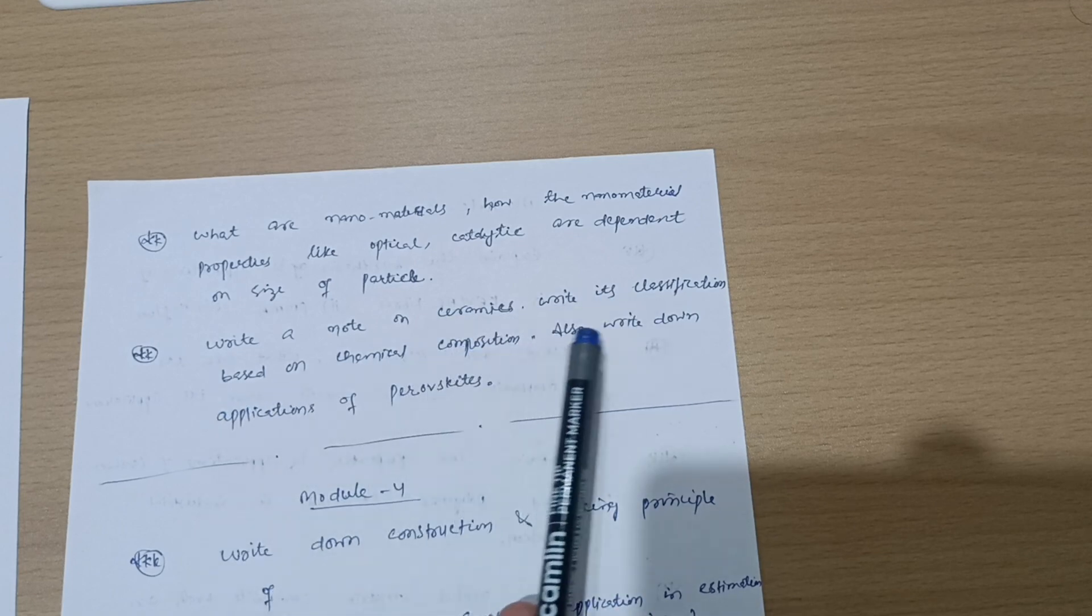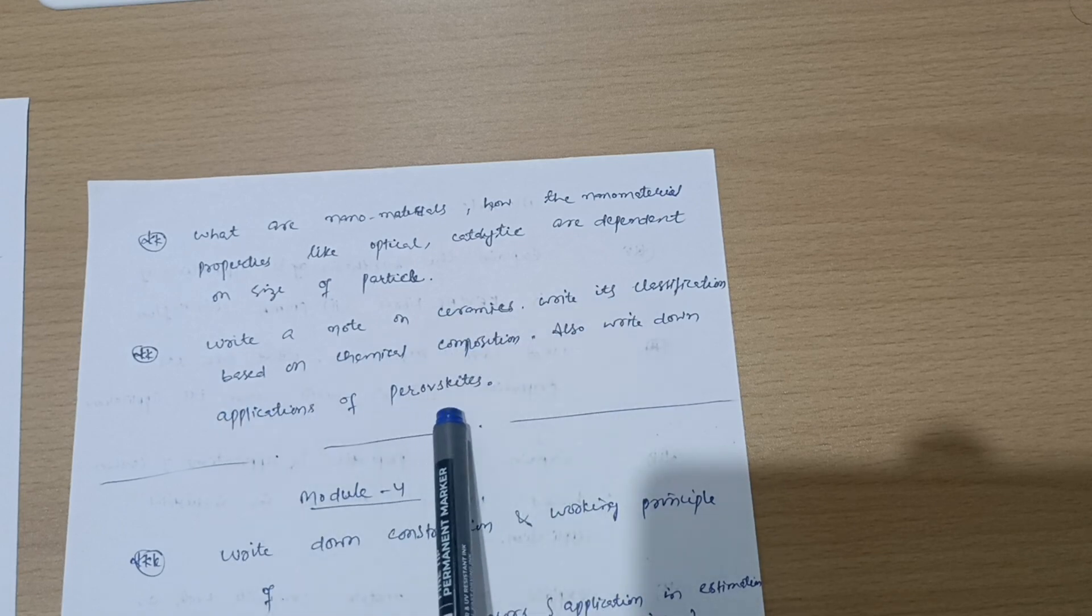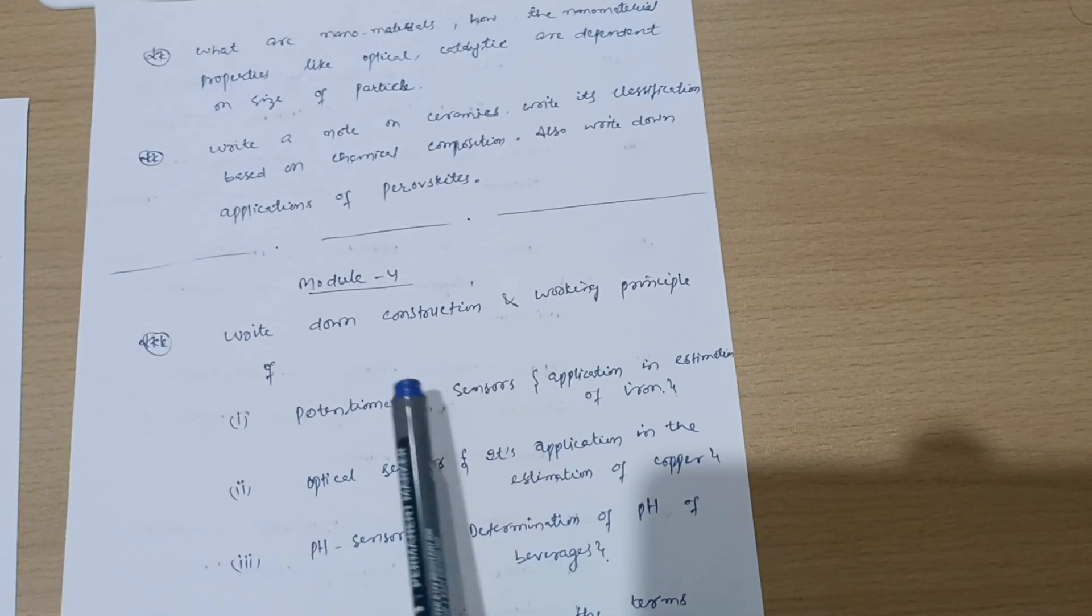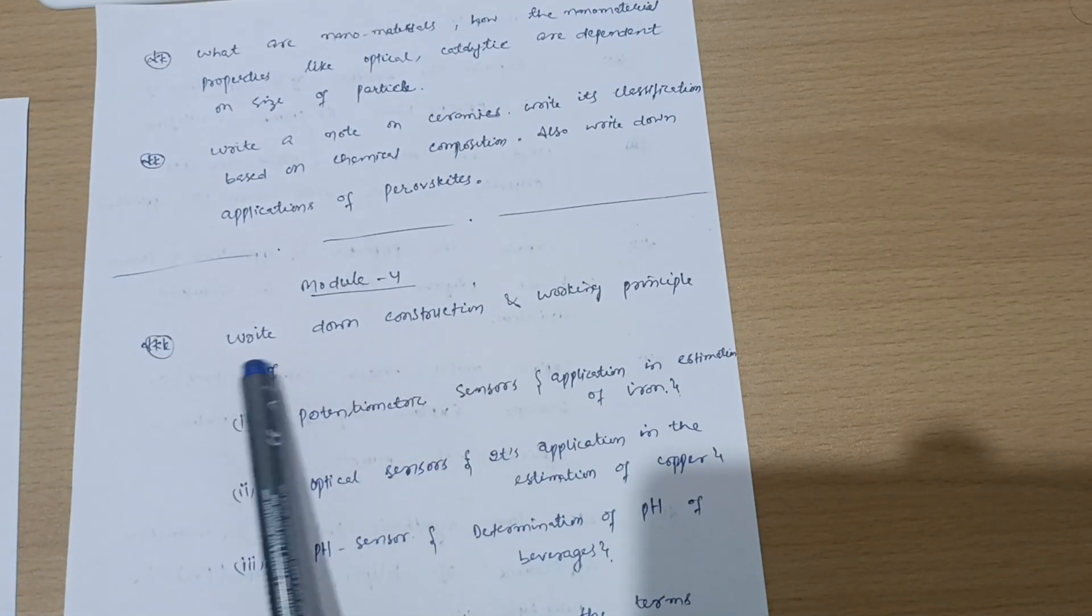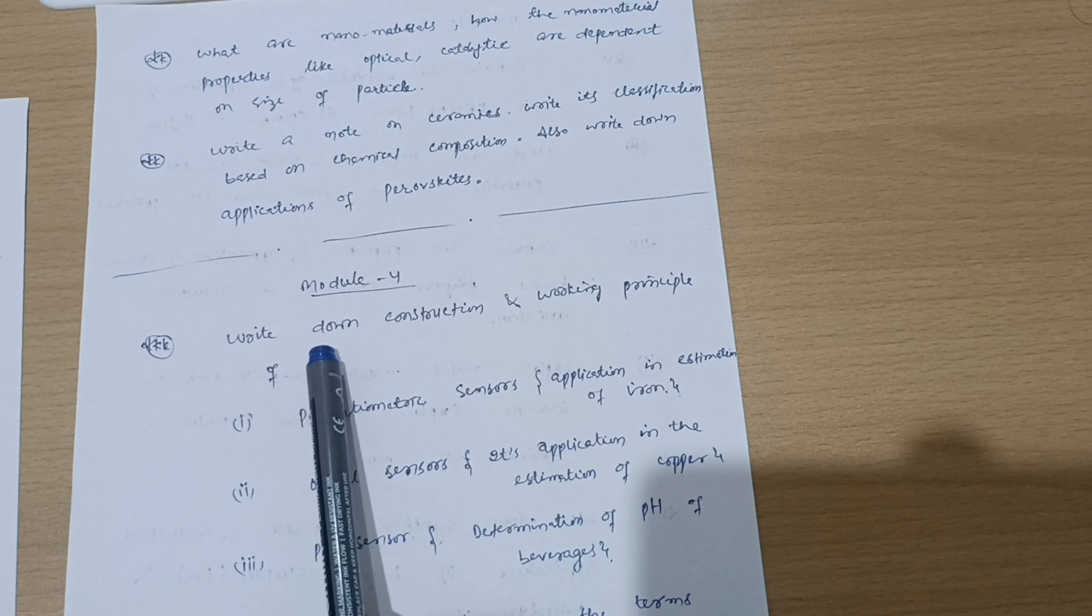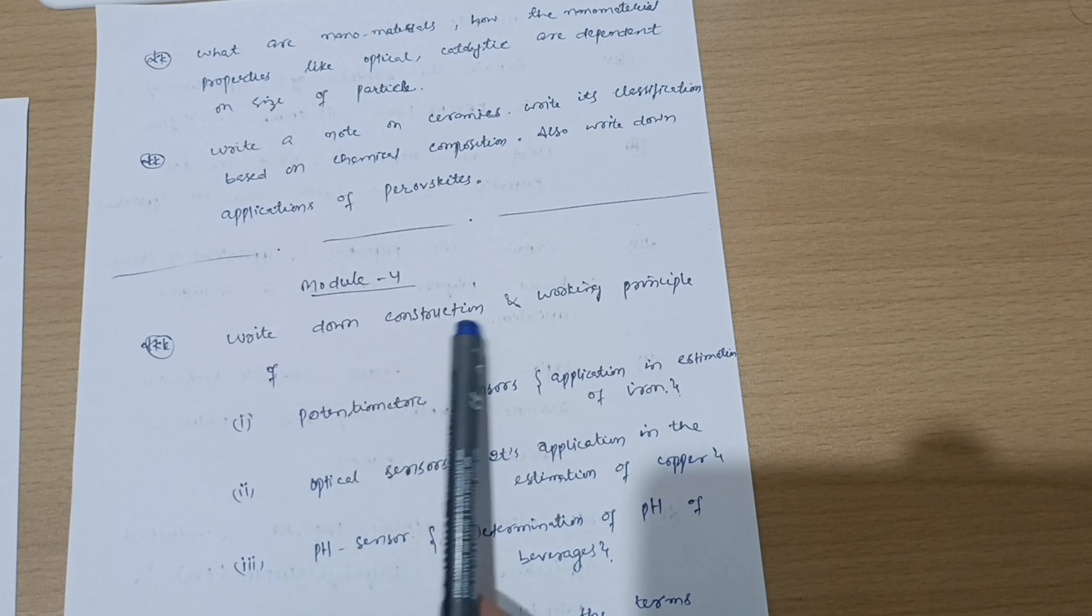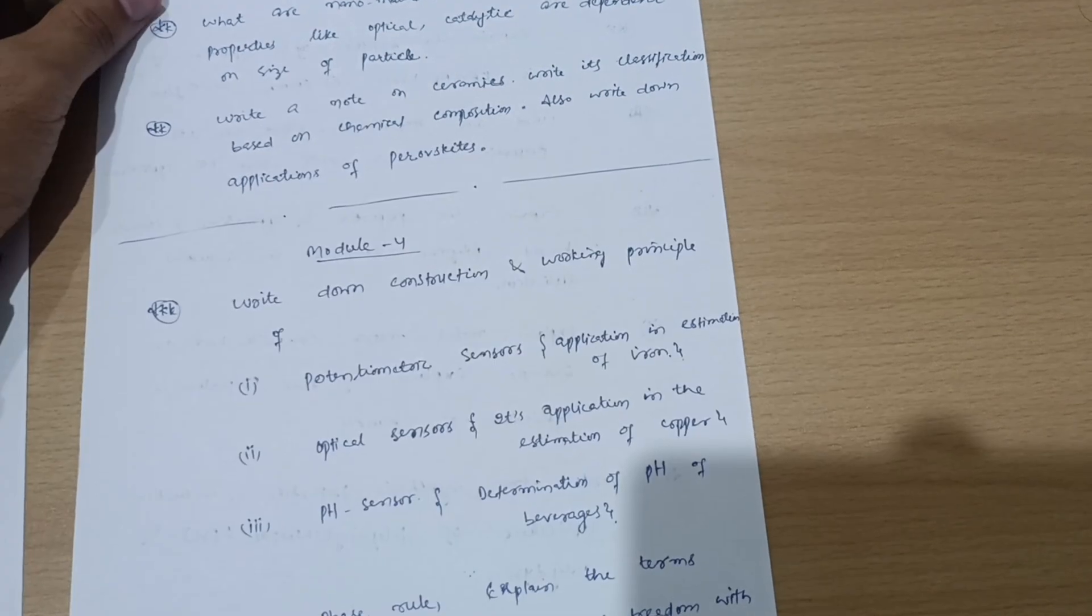Write a short note on ceramics, write its classification based on chemical composition, also write down applications for composites. Next is Module 4, in which you should go through the construction part. Write down construction and working principle of potentiometric sensors.